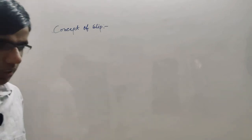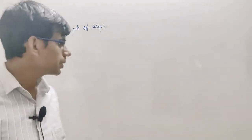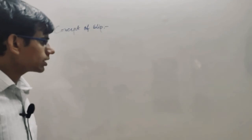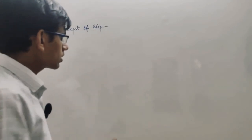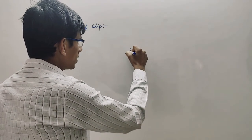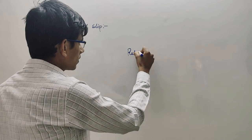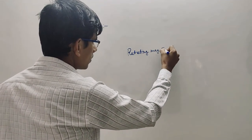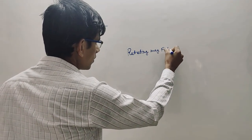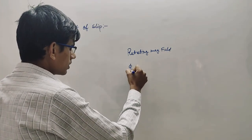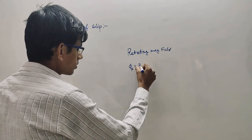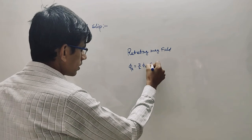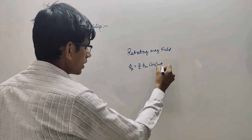But before discussing this topic, first I will revise whatever I did so far. So in the first lecture, I explained the Rotating Magnetic Field. The expression was: phi r is equal to 3/2 phi m cosine of omega t.